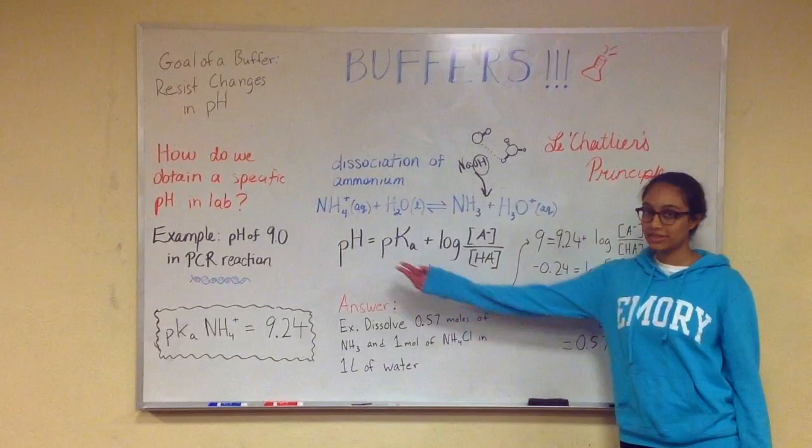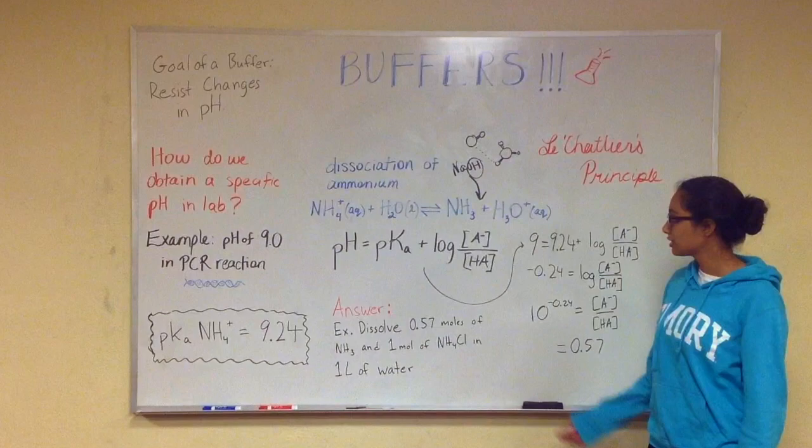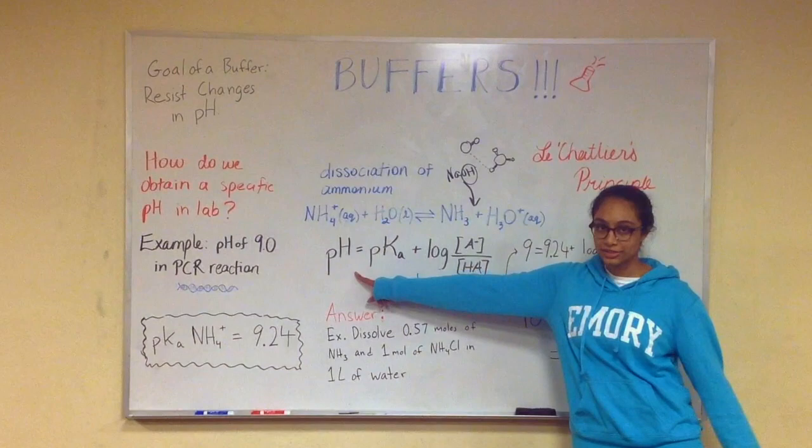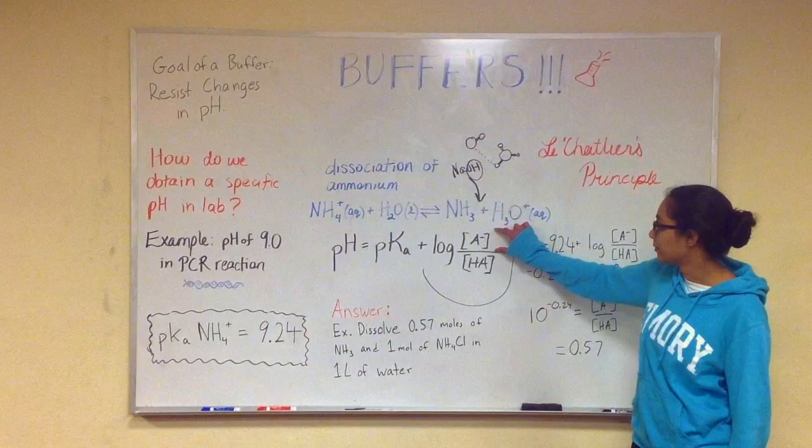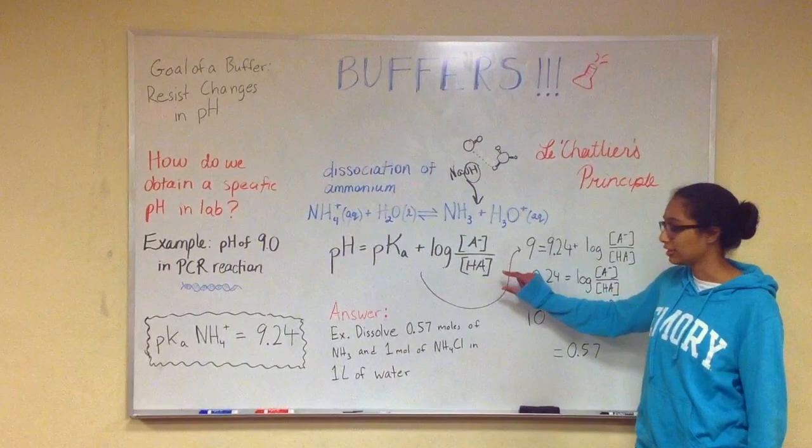So to obtain the pH of 9, we're going to start with a very common equation that you'll see in your chem class. This is called the Henderson-Hasselbach equation. Basically what it does is it helps you get the pH that you need by using the pKa of the acid in solution, which is a property of the acid, plus the logarithm of the concentration of base in your solution divided by the concentration of acid in your solution.